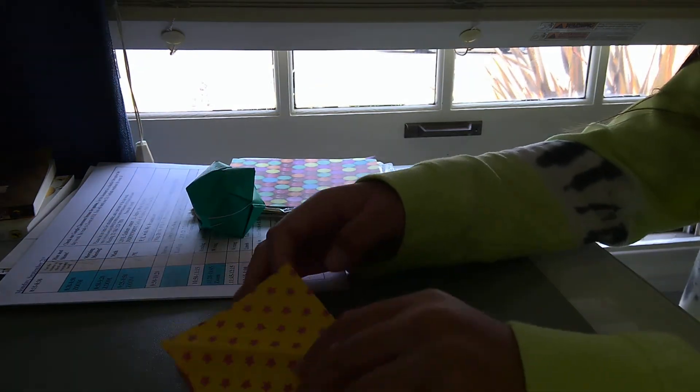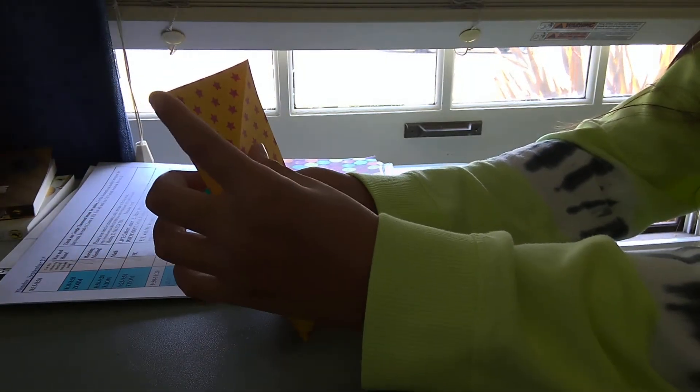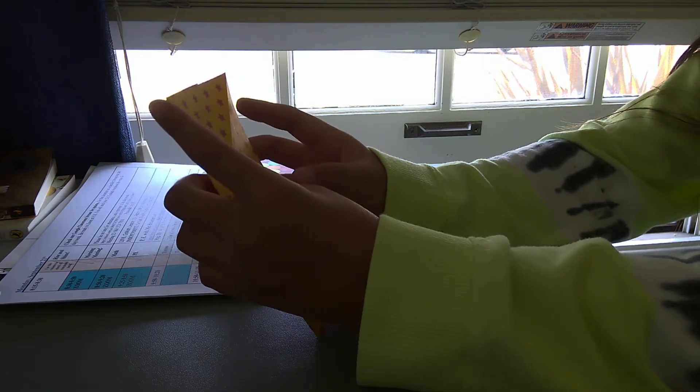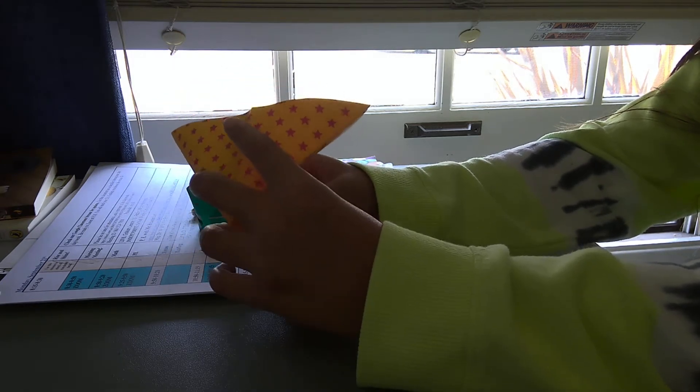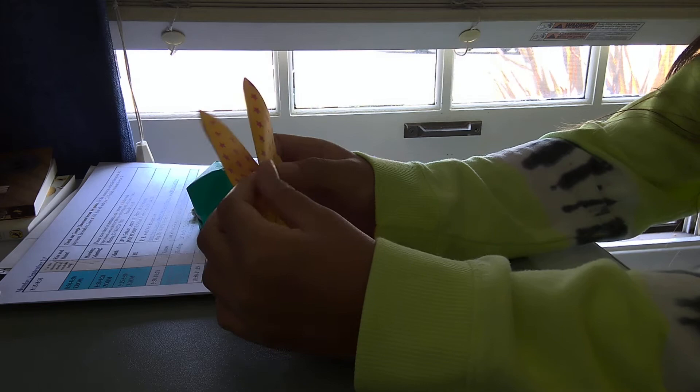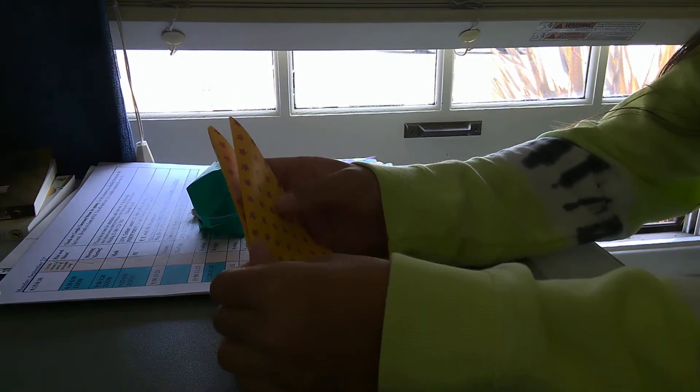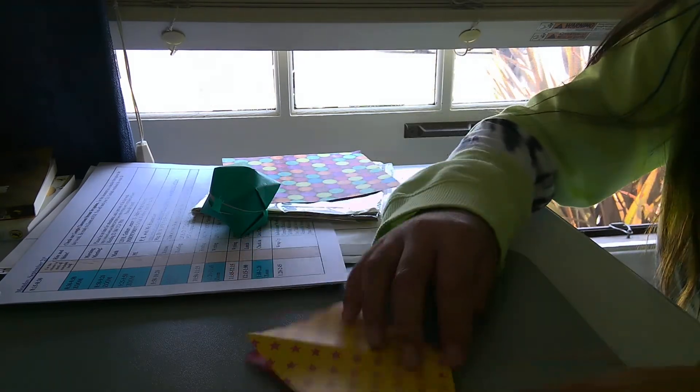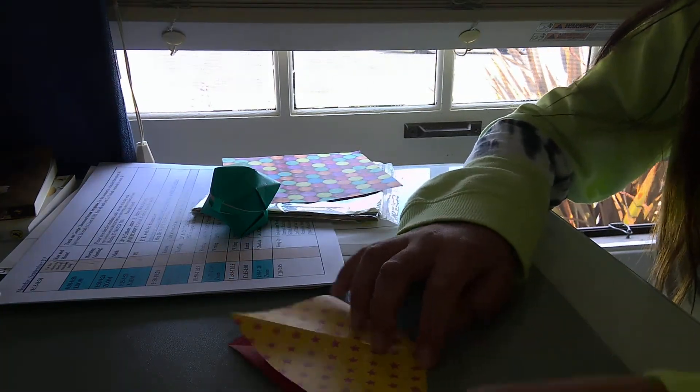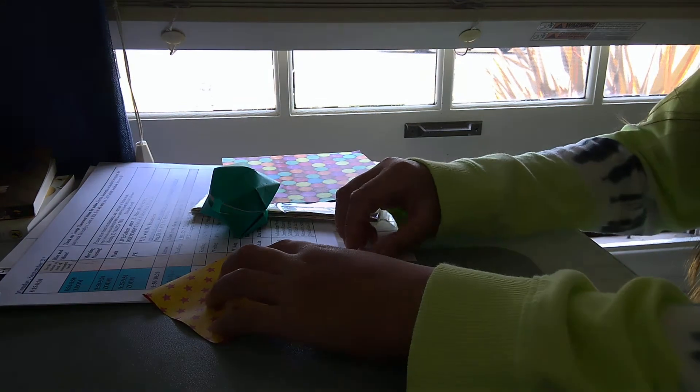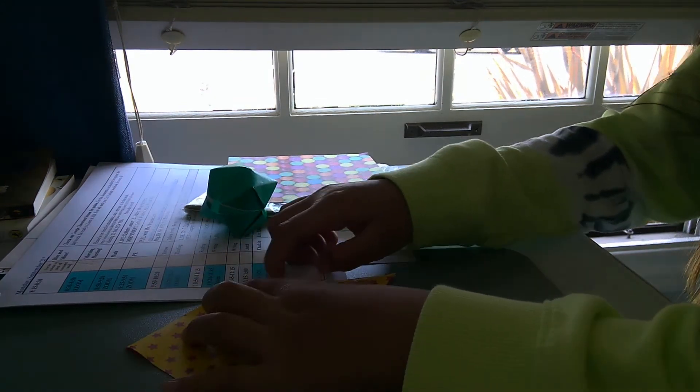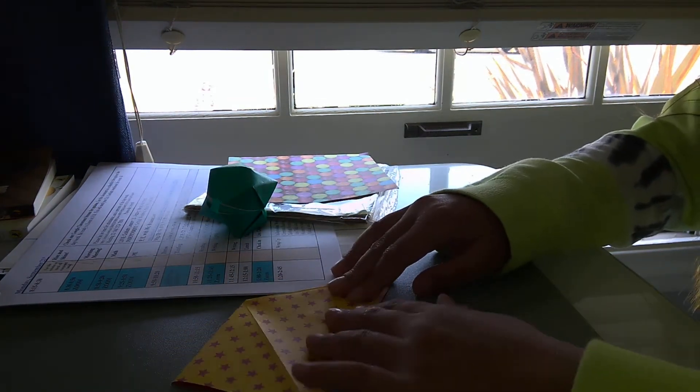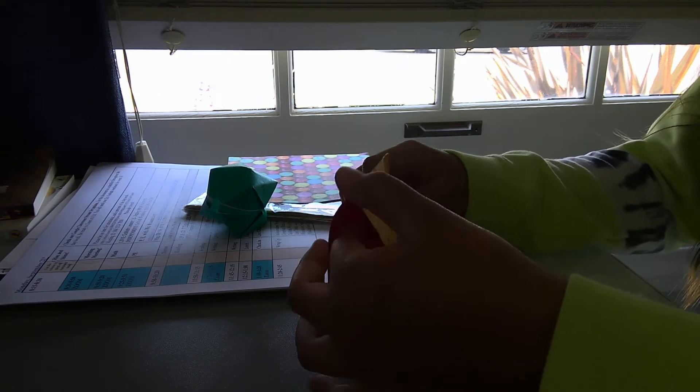From there, fold it in half on the same crease that you made, and then press down all these edges over here. Then just bring it in and make sure it's hiding in there. Just bring it in like that. Do the same with the other side.